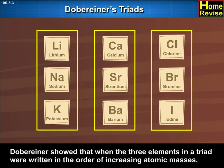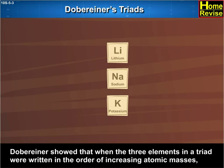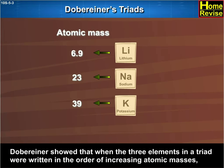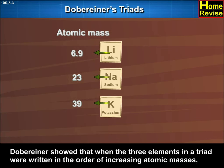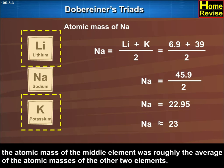Döbereiner showed that when the three elements in a triad were written in the order of increasing atomic masses, the atomic mass of the middle element was roughly the average of the atomic masses of the other two elements.